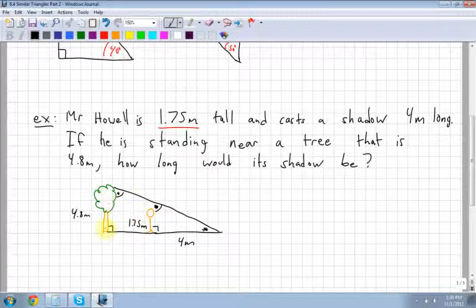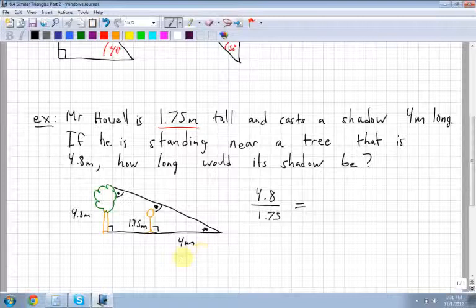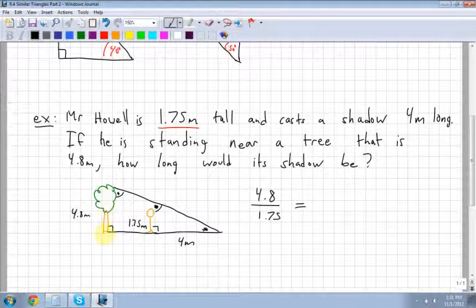So let's start with the big triangle and we'll go to the little triangle. Okay, let's see here. So I have 4.8 and that's like 1.75. And then that's equal to, on the big triangle I have, let me see here. I have me, which I did, the height.